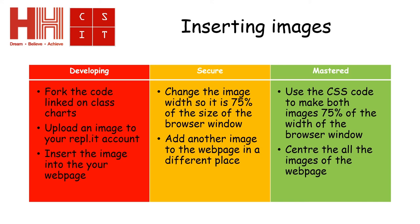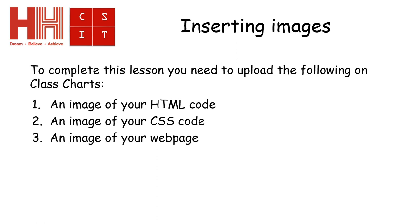Your task is to do the same thing with the code I've given you. First, fork the code from the link on Class Charts. Upload an image of your choice related to Super Mario Brothers to your Repl.it account, then insert it into your web page and set the width to 75 percent of the browser window. Add a second image in a different place, use CSS to make all images 75 percent width and centered. Submit your HTML code, CSS code, and a screenshot of your finished web page.